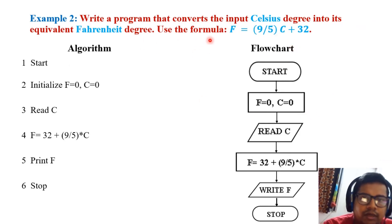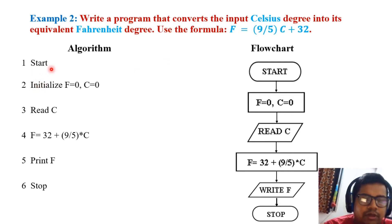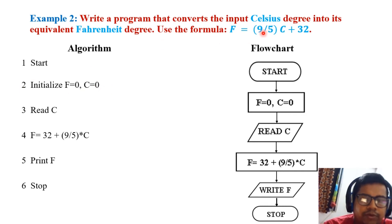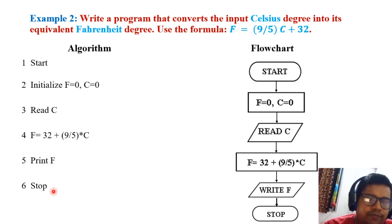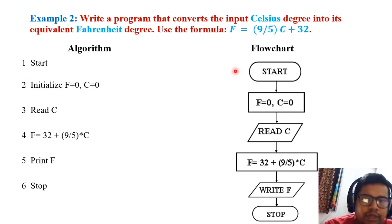Another example: a program that converts Celsius degrees into the equivalent Fahrenheit degrees. The algorithm steps are: Step 1 – Start; Step 2 – Initialize f and c to zero; Step 3 – Read c (the centigrade value); Step 4 – Apply the formula F – 32 = (9/5) × C to compute the corresponding F; Step 5 – Print F; Step 6 – Stop. This system is also expressed pictorially as a flowchart, showing both the algorithm and its flowchart representation.